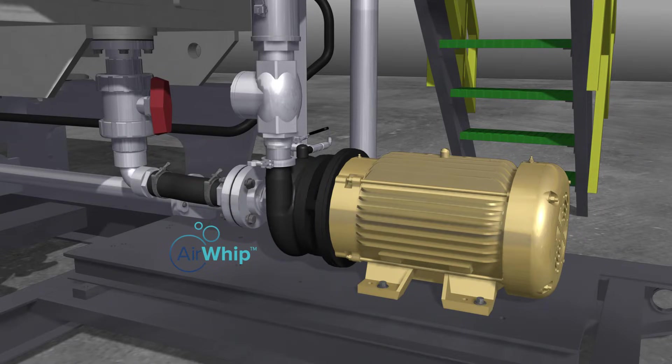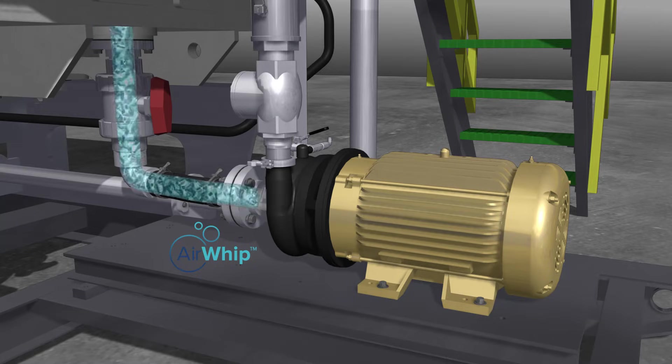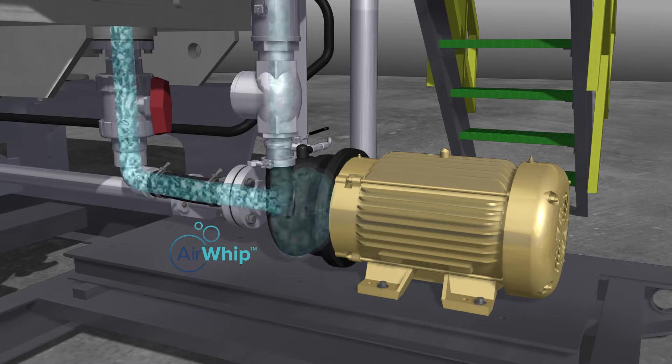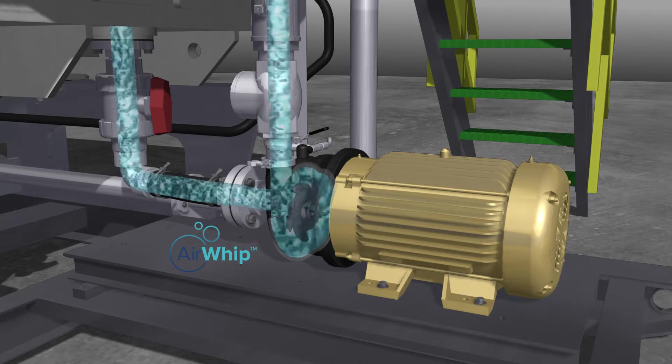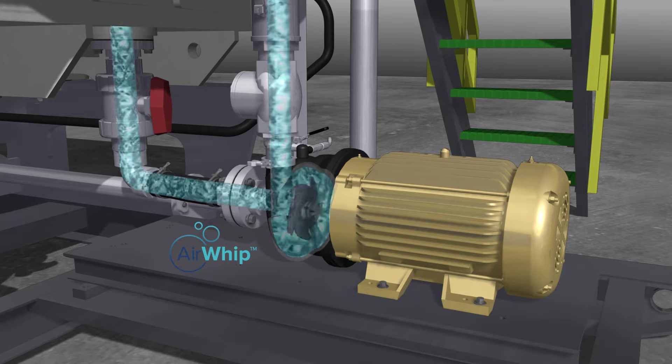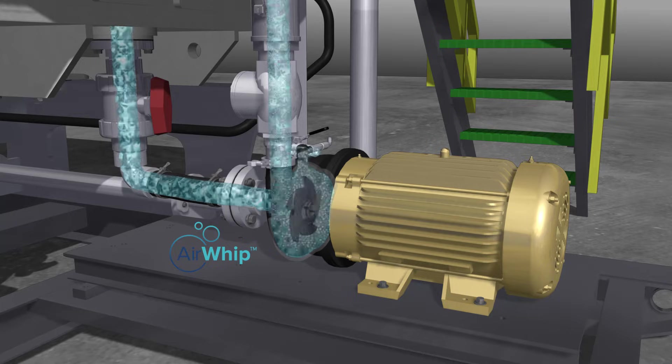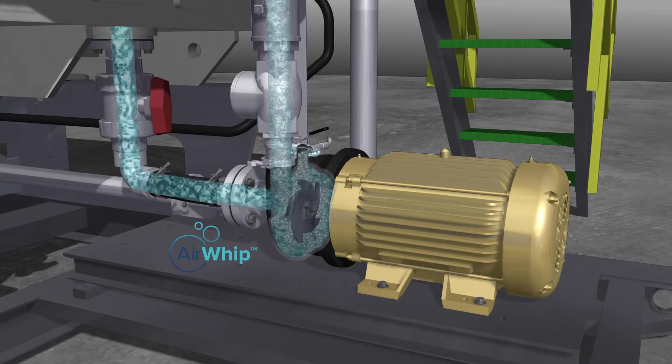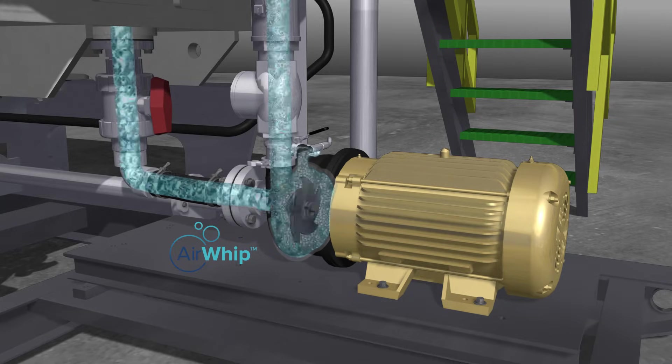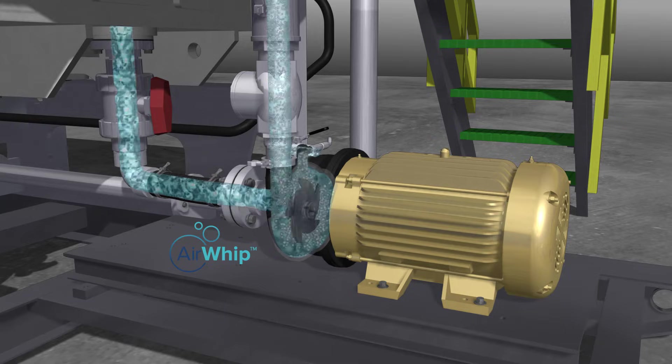The heart of any DAF system is the Dissolved Air Generation, or DAG Pump. World Water Works uses their Air Whip Pump to dissolve the air into the water to allow maximum adhesion to the flock particle. The Air Whip System draws treated water out of the effluent chamber of the DAF and dissolves compressed air into the flow to send back to the DAF header box.